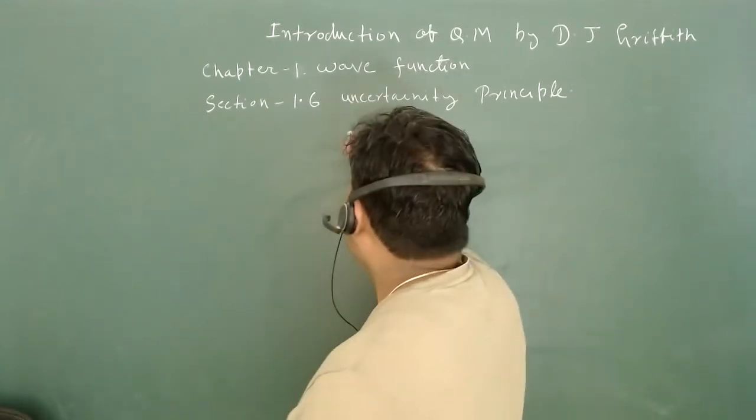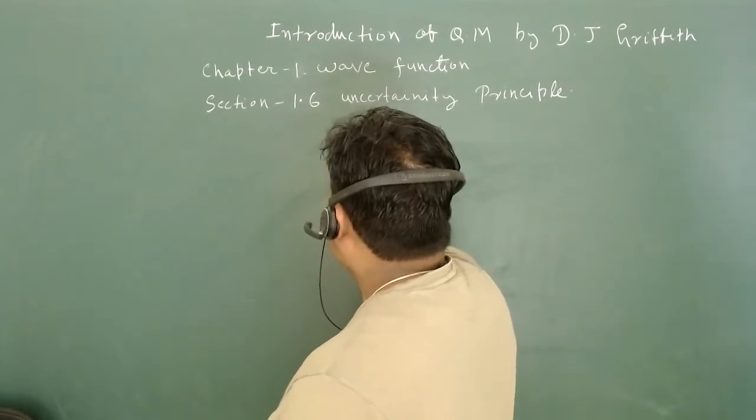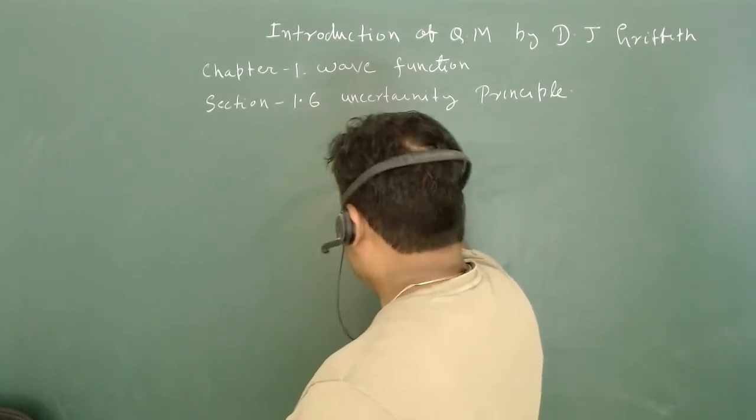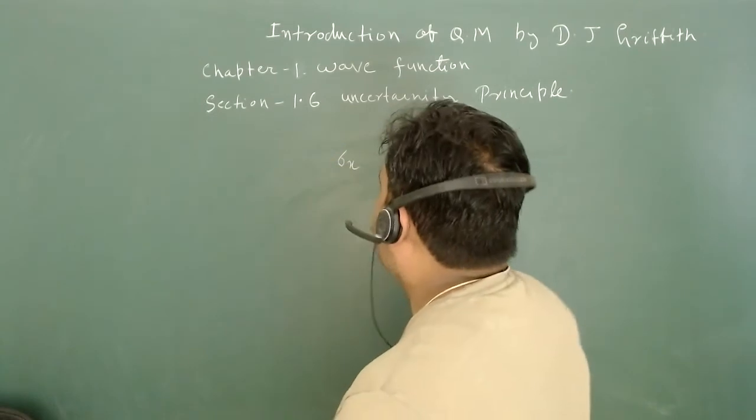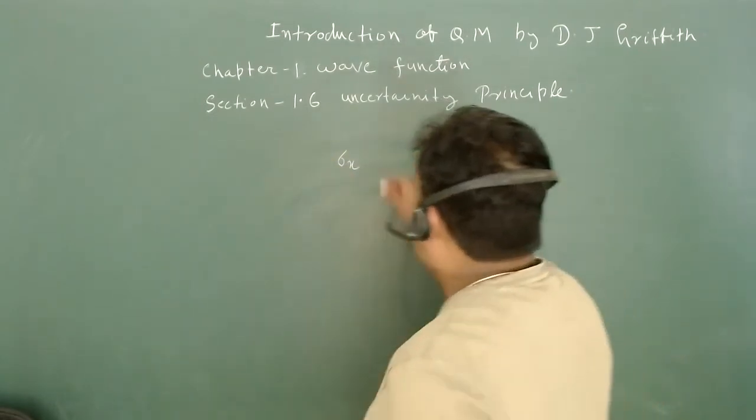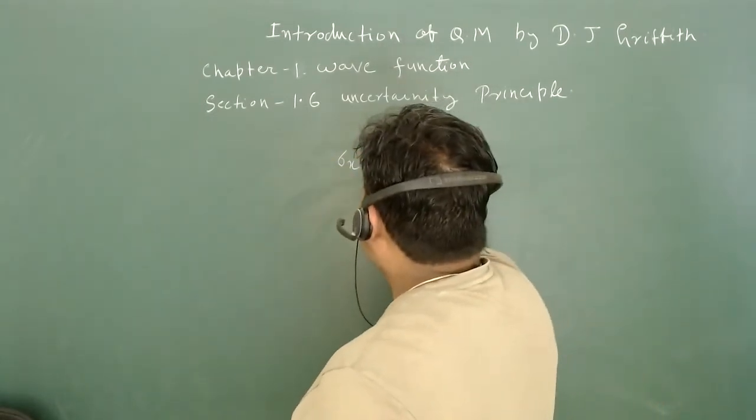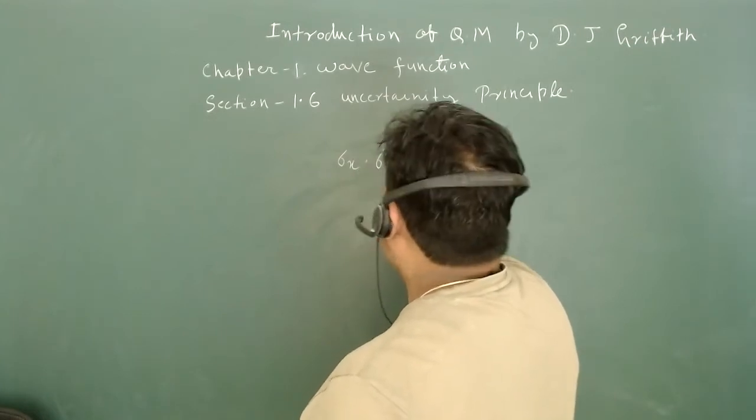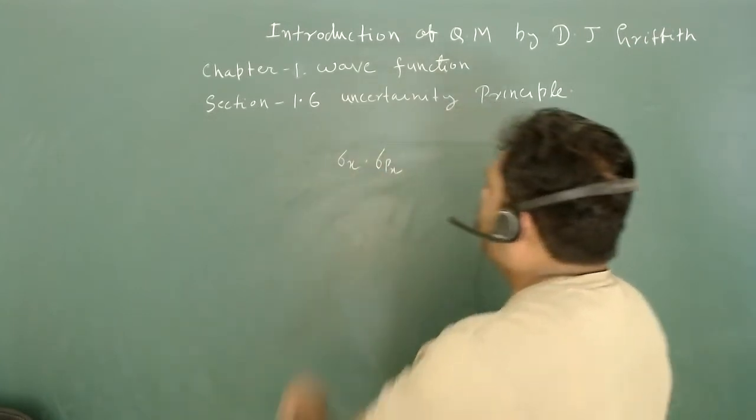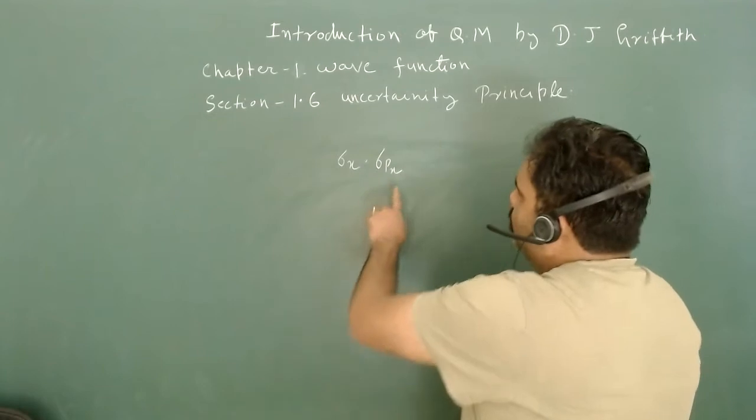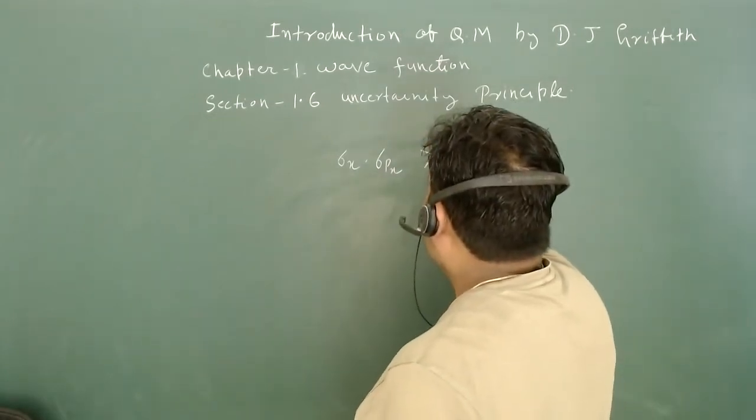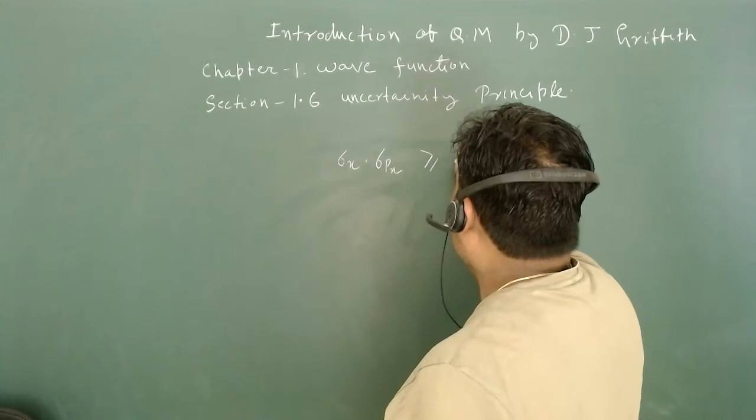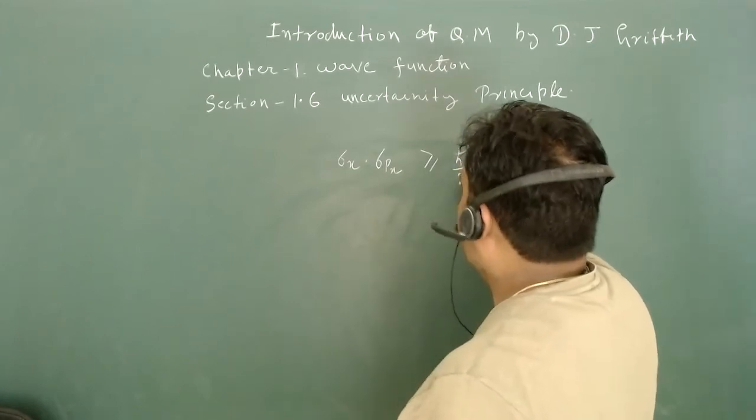What is given in this section is sigma_x, the standard deviation in position, times sigma_px, the uncertainty in measurement of momentum, must be greater than or equal to h-bar by 2.